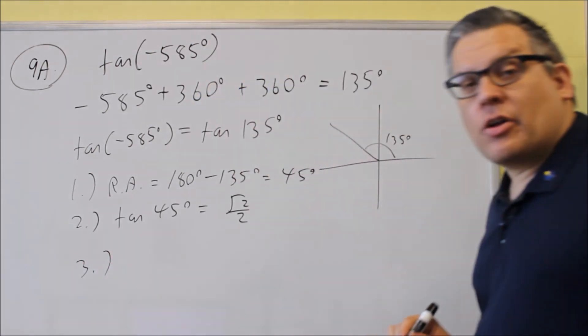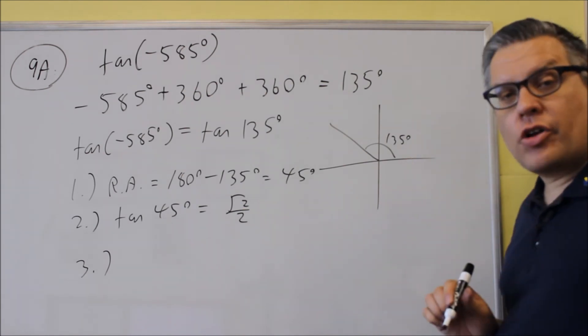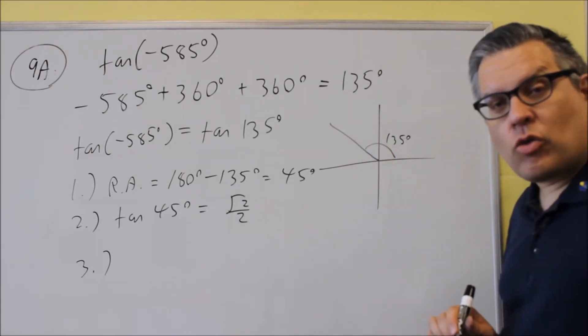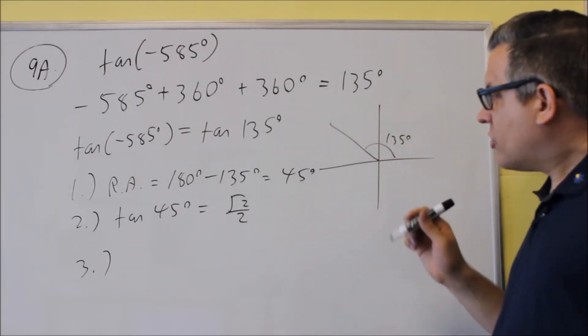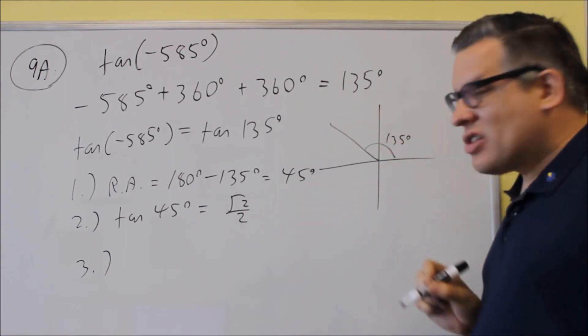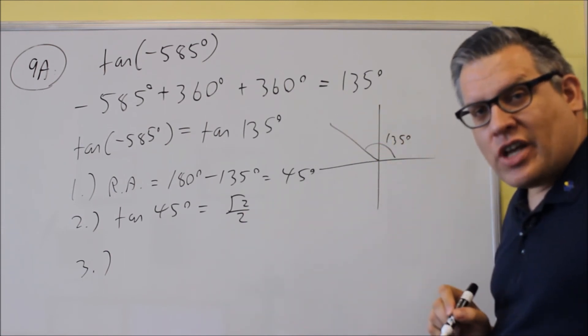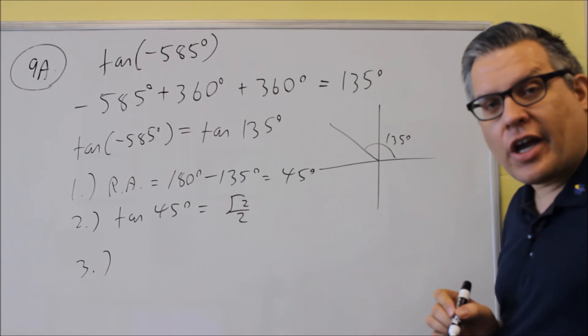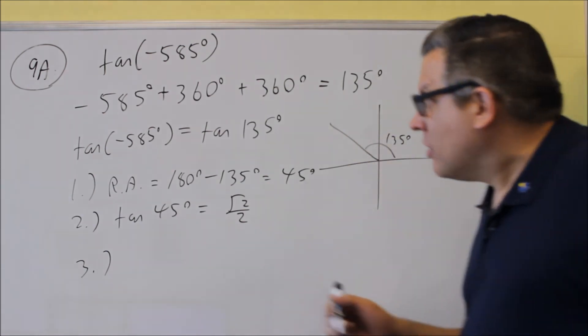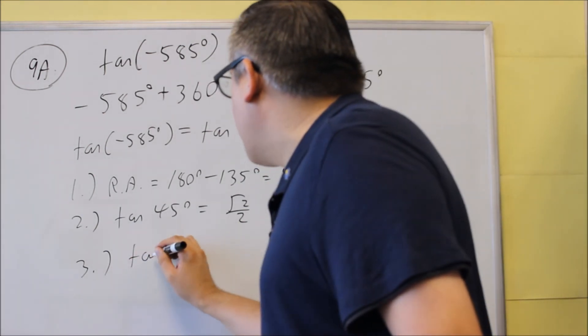Step 3 would be apply the appropriate sign for what quadrant you're in. We end up in the second quadrant, all students. So in this quadrant, sine is positive, everything else is negative. That means that tangent would also be negative here in this second quadrant, which means I need to put a negative on my answer.